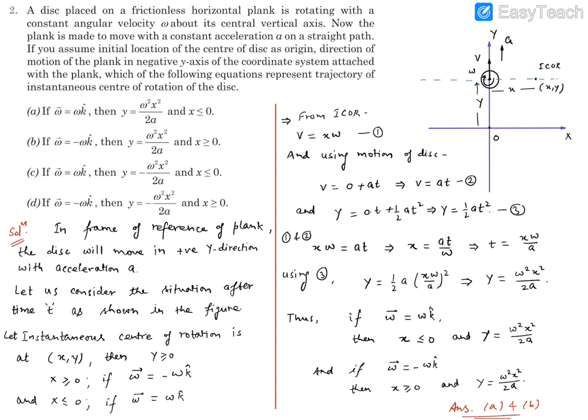Now if we use the motion of disk because this has taken t time, velocity will be equal to at since initial velocity was zero. Y coordinate will be equal to half at square using s equals ut plus half at square.